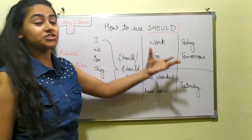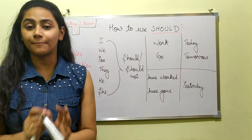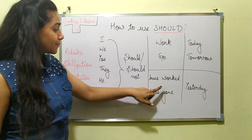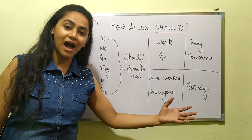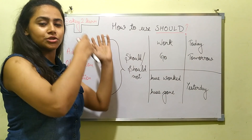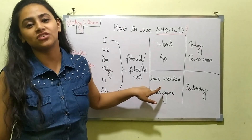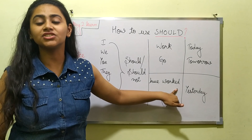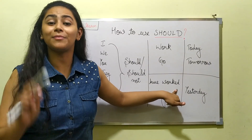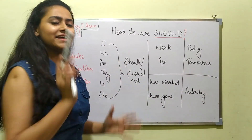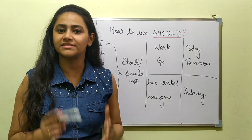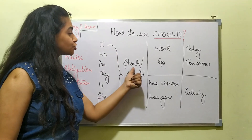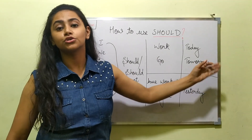Now let's see what changes we make in verb form. We actually do not make much change in the verb form for present — for example, 'work,' 'go.' But when we are talking about past, that's when we make changes. In that case, we use 'have' and then the past participle of the verb. Let's listen to some examples: 'I should go home tomorrow' — a positive, affirmative sentence where everything is normal.